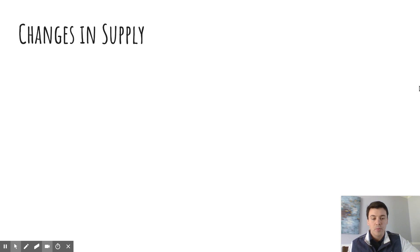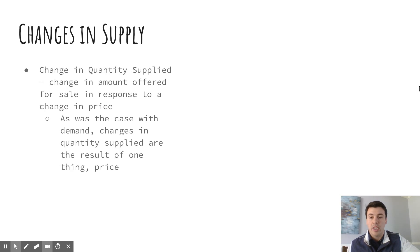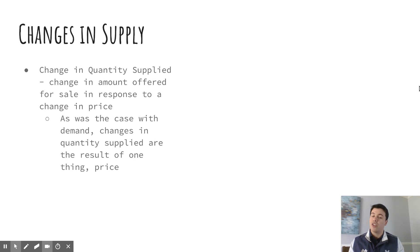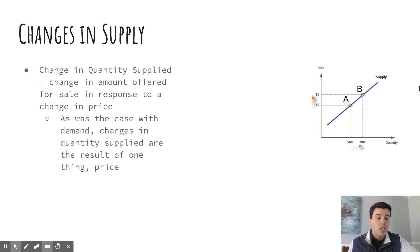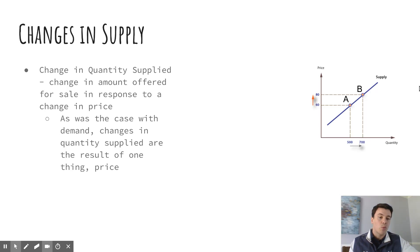Let's look at the changes that could occur with supply. First, we can have a change in quantity supplied — just like with the change in quantity demanded, using the same terminology. The amount offered for sale changes as a result of a change in price. Only one thing can cause a change in quantity supplied, just like with demand, and that is price and price only. Graphically, you can see point A and point B: the price goes up from 60 to 80, and we see an increase in quantity supplied as a result — from 500 to 700 — and vice versa. If the price decreases from 80 to 60, we move from point B to point A, which leads to a decrease in quantity supplied from 700 to 500. Positive relationship on a supply curve: price goes up, so does quantity supplied; price goes down, so does quantity supplied.